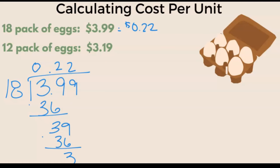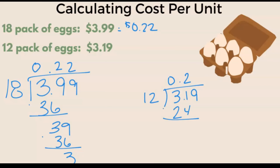Now let's figure out the cost per egg for the 12-pack. We set it up: $3.19 divided by 12. 12 goes into 3 zero times. We put our decimal down. 12 goes into 31 two times. 2 times 12 is 24, with a remainder of 7. We bring down the 9. 12 goes into 79 six times. 6 times 12 is 72. We have a remainder of 7, but that's good enough — we've got 26 cents here.